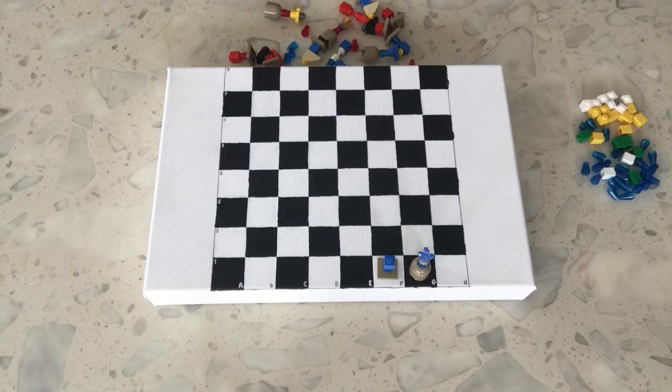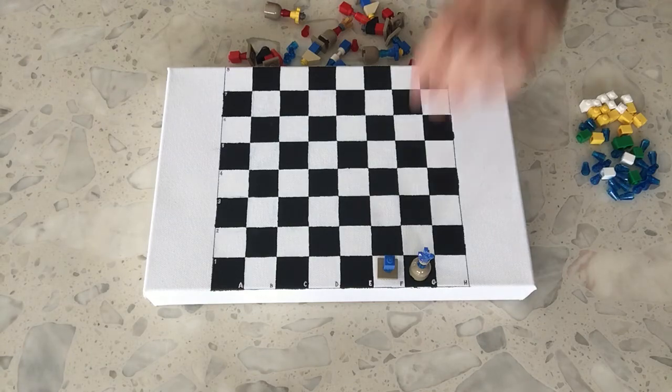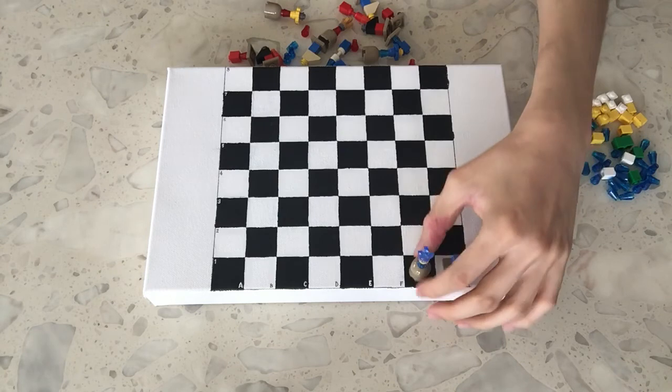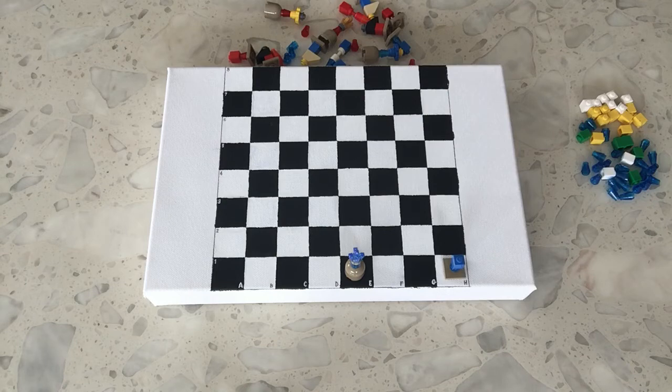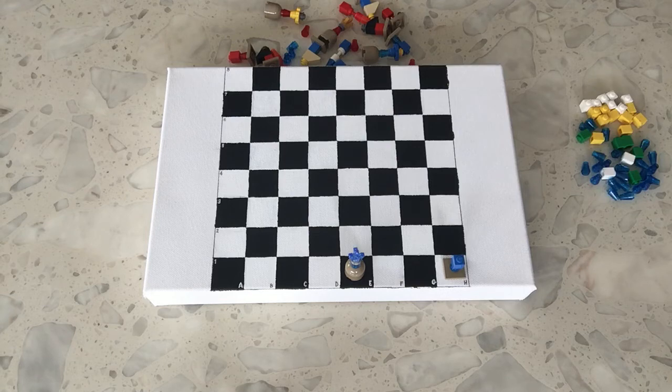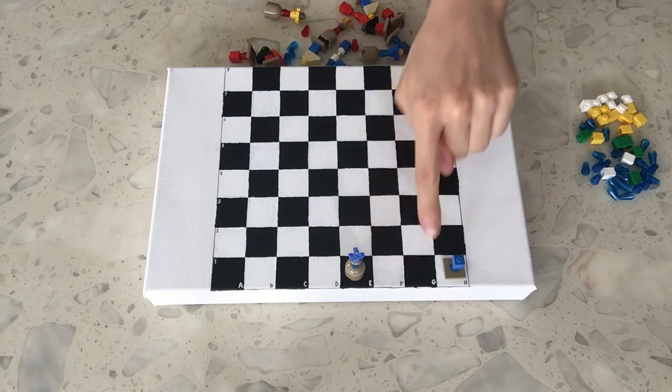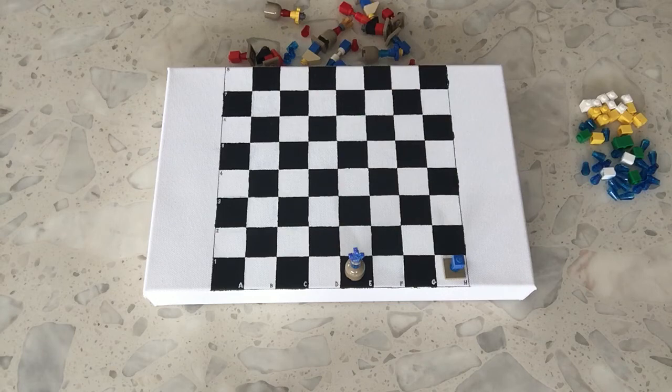So there are several rules in order to castle. It must be the king's very first move, and it must be either rook's first move of the game as well. Next, there cannot be any pieces in between. You must have both of these squares clear, otherwise you won't do castling.